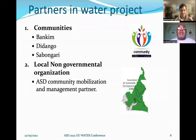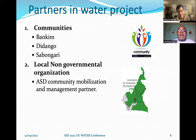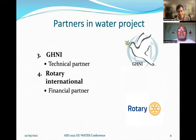In this project, a partnership was built between the communities of Bankim, Jidango, and Sabangare with our organization — the Association for Sustainable Development — which worked as a management and mobilization partner in the community, as well as Global Hope Network International, which was a technical partner, and Rotary International, which was a financial partner.